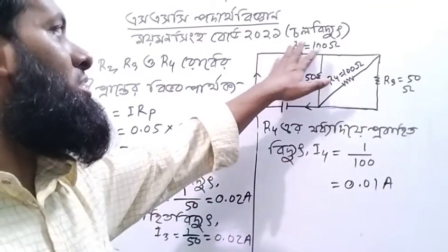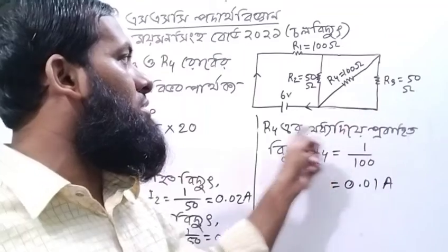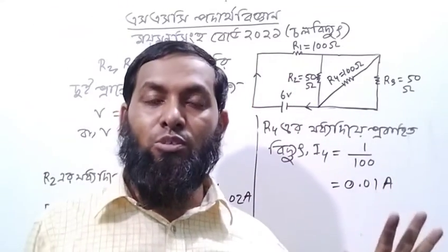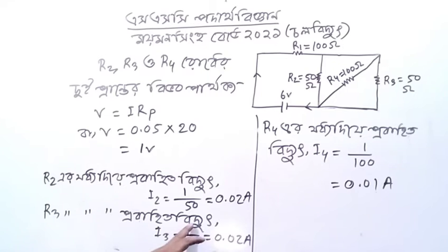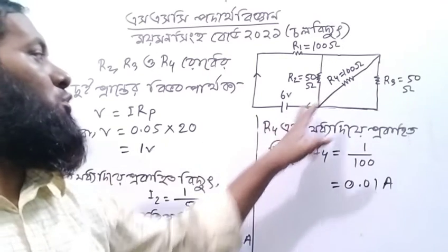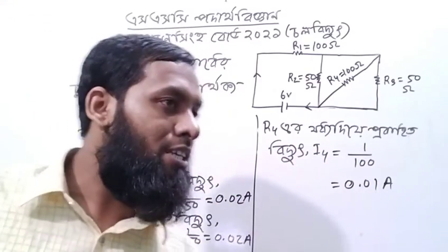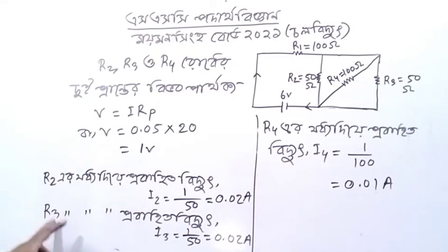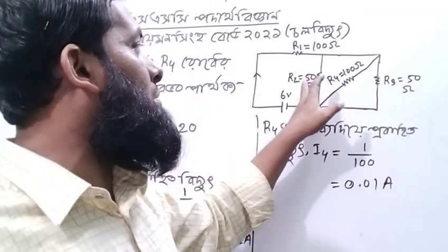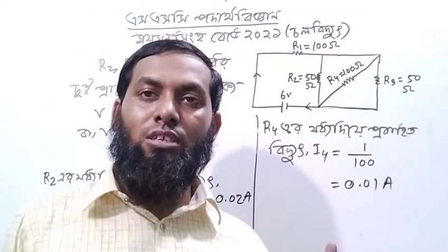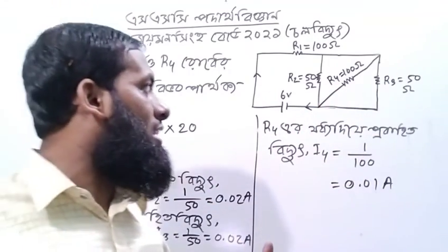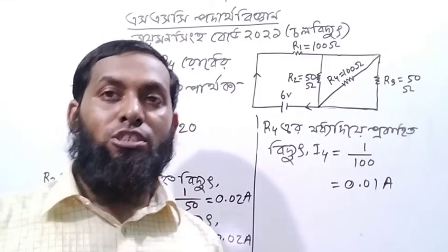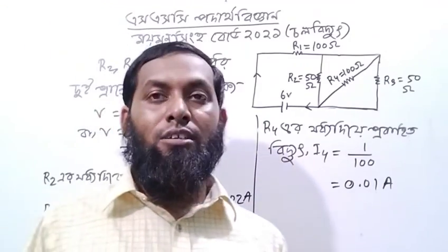The r1 is 0.05. So the r2 is 0.02 A, r3 is 0.02 A, r4 is 0.01 A. So the r2 is 0.01 A, r4 is 0.02 A, 30 A. Is it not an object, which is 0.15?